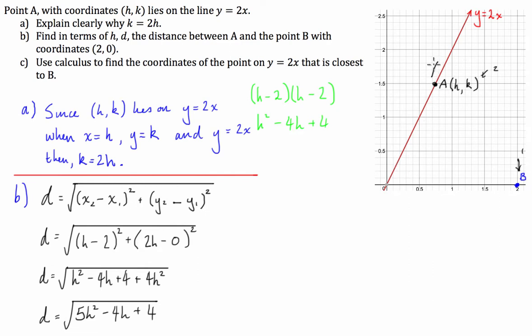Okay, so part C. Use calculus to find the coordinate of the point on y equals 2x that is closest to B. Okay. So what is the goal in part C? Well, we have to find the point in terms of h that minimizes d or this value here. So let's get cracking.